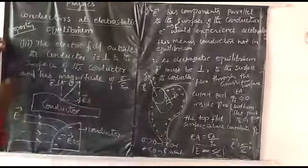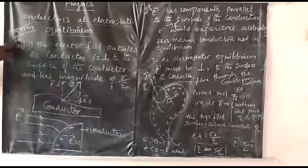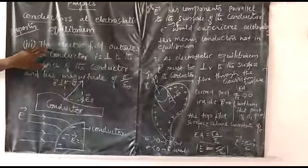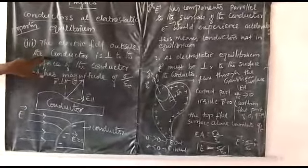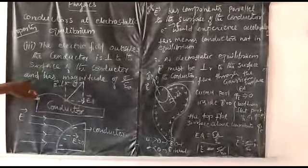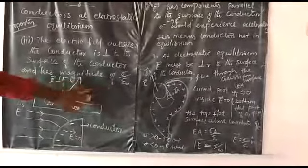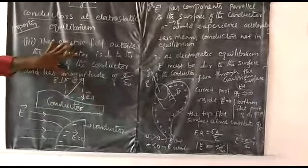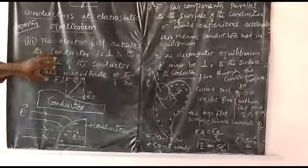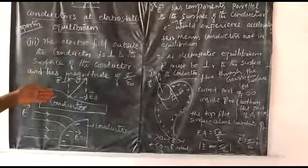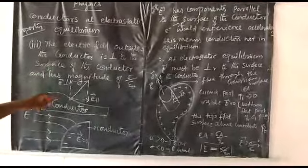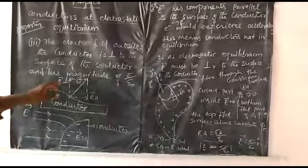Now we are going to discuss the third property of electrostatic equilibrium. The electric field outside the conductor is perpendicular to the surface of the conductor and has a magnitude of σ / ε₀. This is the third property of electrostatic equilibrium: the electric field outside is perpendicular to the surface with magnitude σ / ε₀.